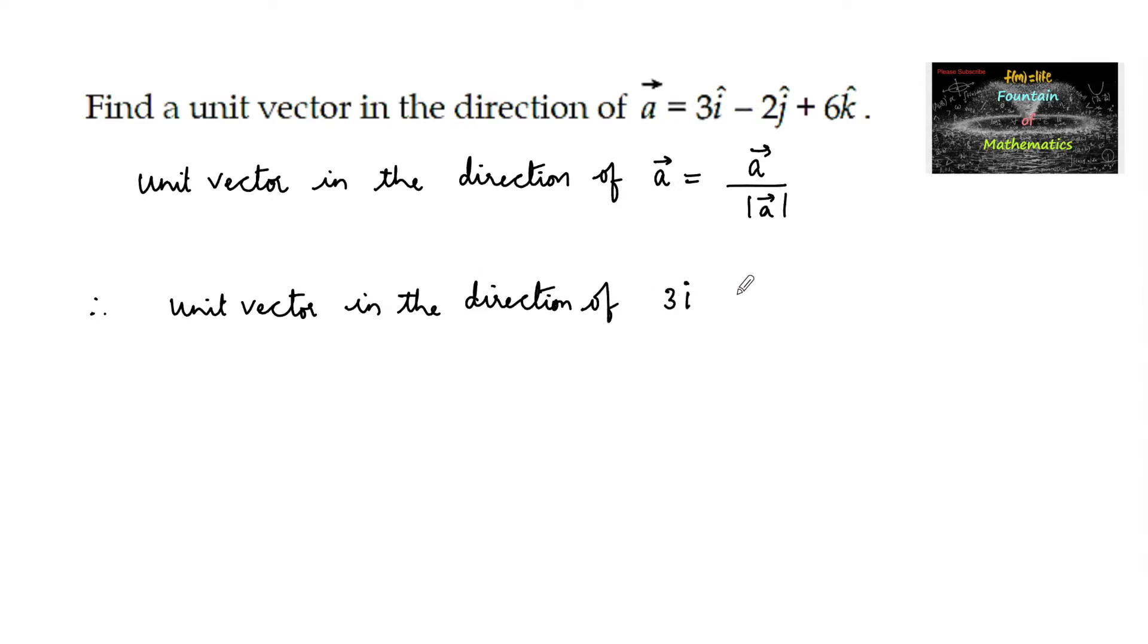a vector 3i minus 2j plus 6k cap is equal to 3i minus 2j plus 6k cap upon mod of 3i minus 2j plus 6k cap